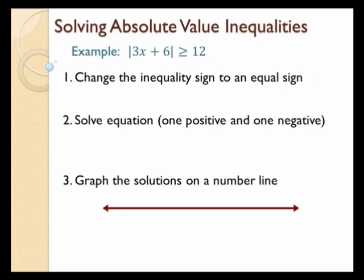Step number one: change the inequality sign to an equal sign. There are several different ways to solve these — this is the easiest way I've found. I'm going to ignore the inequality sign for now and change it to an equal sign, so I end up with the absolute value of 3x plus 6 equals 12. We'll bring the inequality back toward the end of the problem.